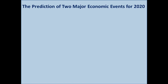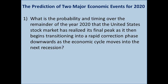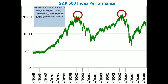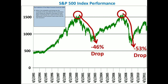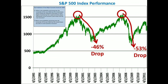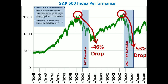In this video we will predict two major economic events that have a high probability of occurring in 2020. The first will predict the probability and timing over the remainder of 2020 that the United States stock market has realized its final peak, then begins transitioning into a rapid correction phase downwards as the economic cycle moves into the next recession. The second will predict the probability and timing that the United States has entered its next economic recession.